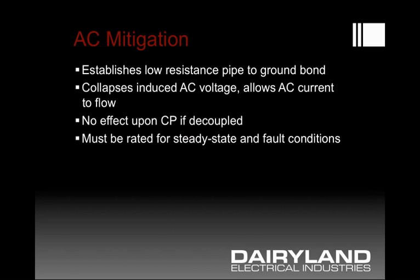AC mitigation is accomplished by establishing a low-resistance connection between the pipe and a grounding system, which collapses the induced AC with AC current flowing as a result. One could measure and find that the induced AC voltage is now very low. Using decoupler products — DC blocking devices that simultaneously mitigate AC — there will be no effect upon the cathodic protection. Such a system must be rated for both steady-state and fault conditions.